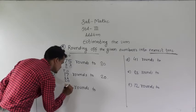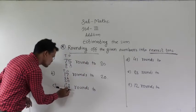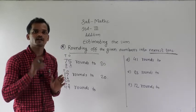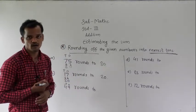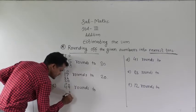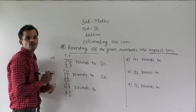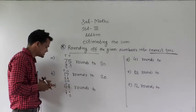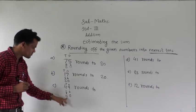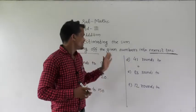While rounding up to the nearest 10, you have to see the ones place digit. Here the ones digit is 9, which is greater than 5, so the number will be rounded up. Write 0 under the 9 and add 1 into the tens place digit: 4 plus 1 equals 5. So 49 rounds to 50.